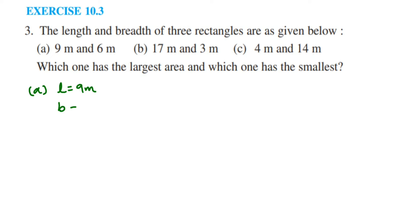First one, we have given length as 9 meter and breadth is equal to 6 meter. Now we know area of rectangle is length into breadth. So area is equal to length into breadth, so length is 9, breadth is 6. 9 times 6 is 54, we'll get 54 meter square.